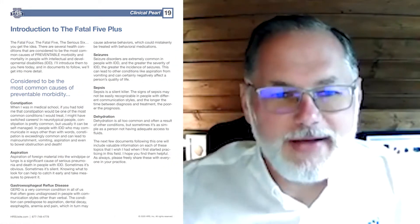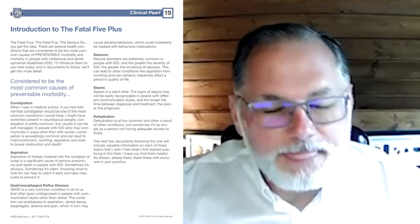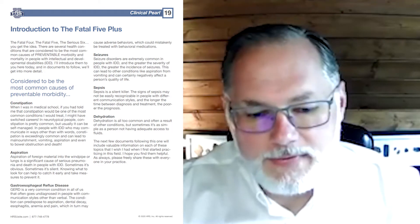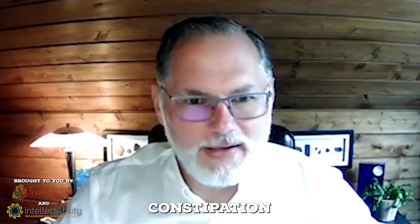So what are the fatal five conditions? The first one, and something we see all too commonly in people with disabilities, is constipation. You might wonder how constipation can be fatal — well, when it goes unrecognized for long periods of time, it can lead to bowel obstructions and major complications. That's one of the biggest preventable causes, and we'll talk more about that in the constipation segment.